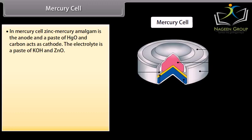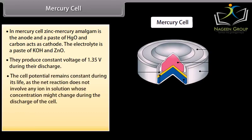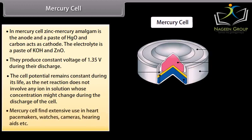Mercury cell. In mercury cell, zinc mercury amalgam is the anode and a paste of HgO and carbon acts as cathode. The electrolyte is a paste of KOH and ZnO. They produce constant voltage of 1.35 volt during their discharge. The cell potential remains constant during its life as the net reaction does not involve any ion in solution whose concentration might change during the discharge of the cell. Mercury cell finds extensive use in heart pacemakers, watches, cameras, hearing aids, etc.